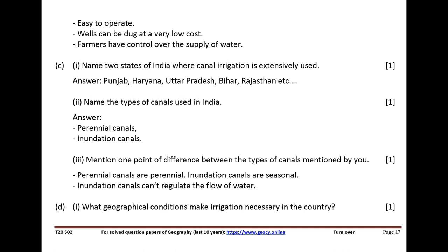Name two states of India where canal irrigation is extensively used. Answer: Punjab, Haryana, Uttar Pradesh, Bihar, Rajasthan, etc. Name the types of canals used in India. Answer: perennial canals and inundation canals. Mention one point of difference between the types of canals. Perennial canals are perennial. Inundation canals are seasonal and cannot regulate the flow of water.